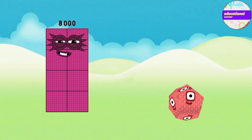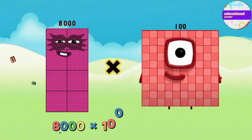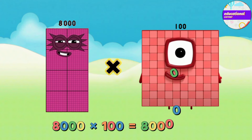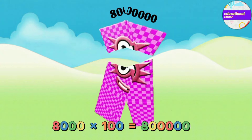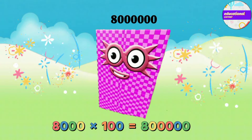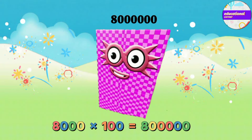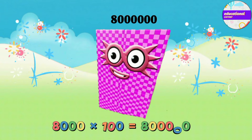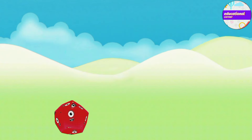Eight thousand one hundred multiply by one hundred equals eight hundred thousand.